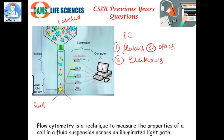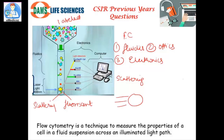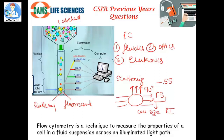Two types of signals can be detected: scattering signals and fluorescent signals. In scattering, if the laser light is scattered in the forward direction, it is known as forward scattering, which helps determine cell size and refractive index. If it is deflected at 90 degrees, it is known as side scattering, which helps determine the granules present in the cells.